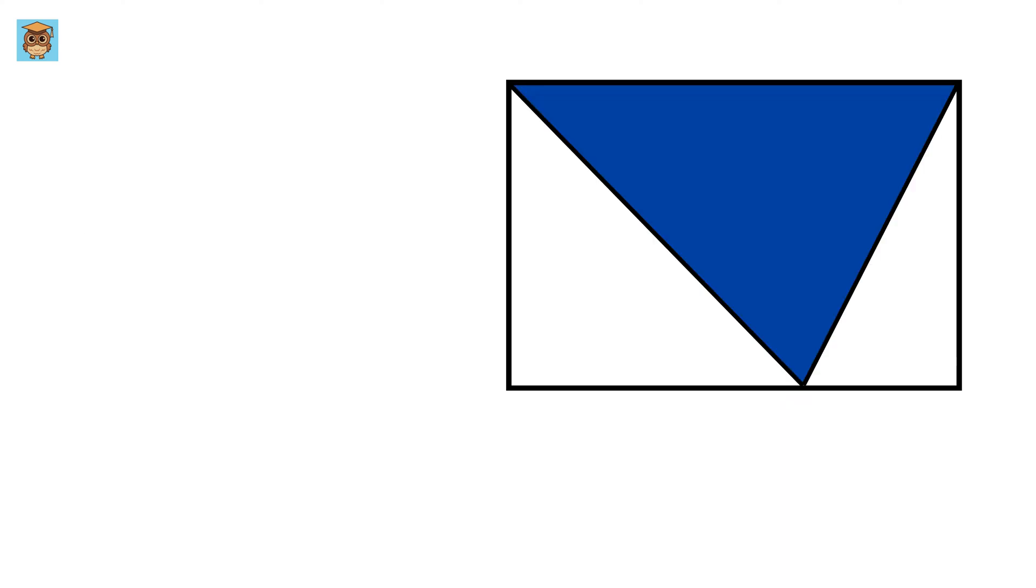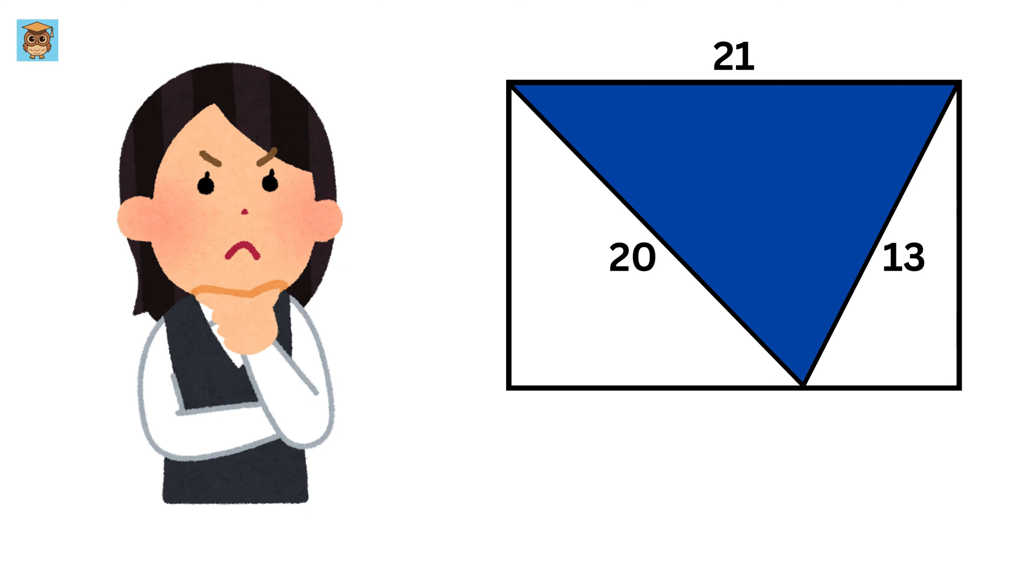We have this rectangle inside of which we have this scalene triangle. This side is of length 13, this is of length 20, and this base is of length 21 units. Our job is to find the value of the length of this piece, or X.